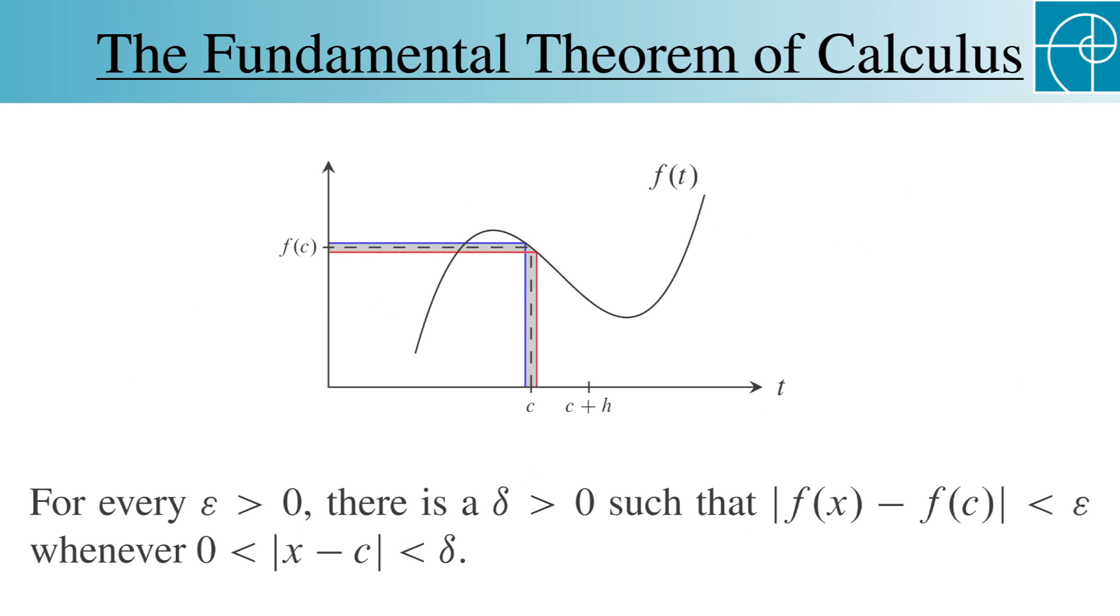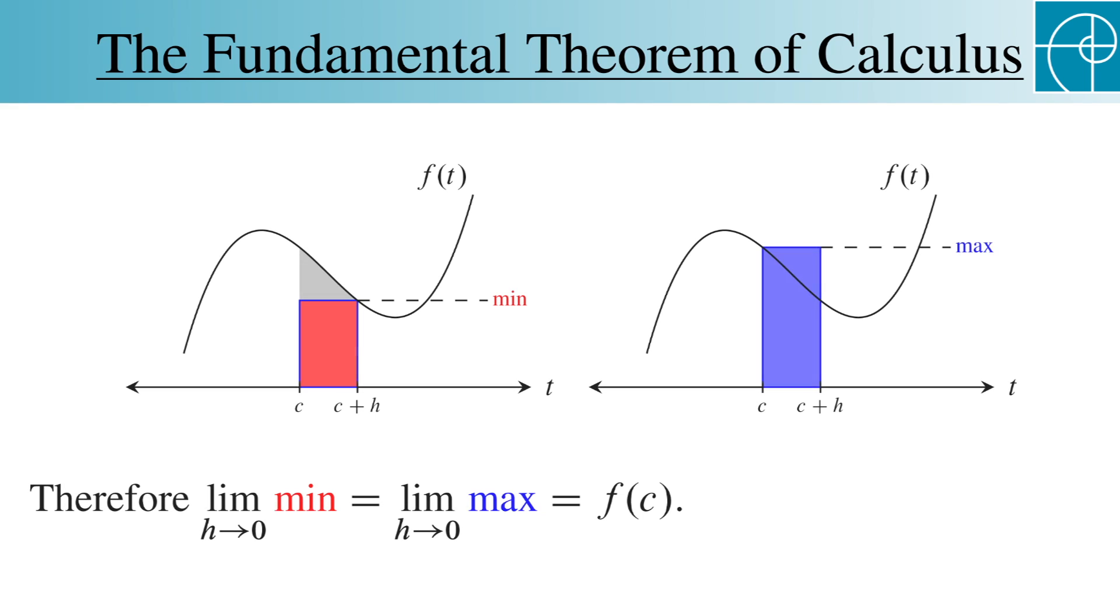This means that for every epsilon greater than zero, there's a delta greater than zero, such that the absolute value of f of x minus f of c is less than epsilon, whenever the absolute value of x minus c is strictly between zero and delta. This means that as h approaches zero, both the minimum and maximum values of f on that shrinking interval approach f of c.